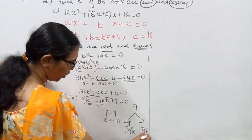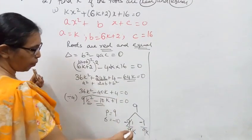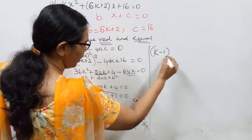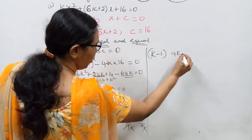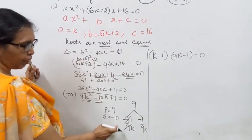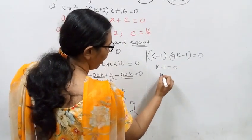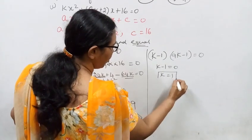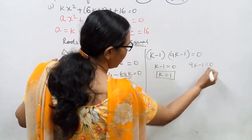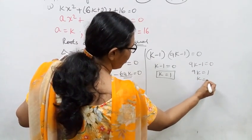Factoring: (k-1)(9k-1) = 0. From this, k - 1 = 0 gives k = 1, and 9k - 1 = 0 gives k = 1/9.